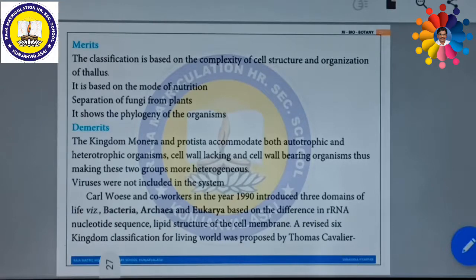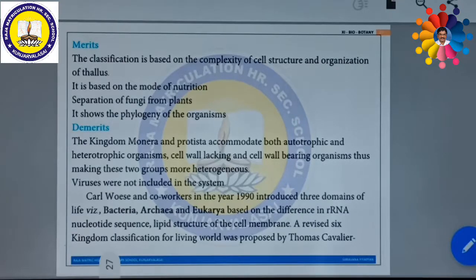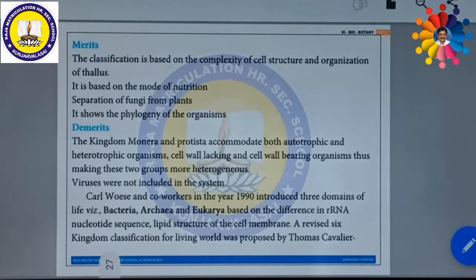The demerits: the kingdoms Monera and Protista accommodate both autotrophic and heterotrophic organisms — both cell wall-lacking and cell wall-bearing organisms. Some organisms have a cell wall and some do not, yet they are kept in the same group, making these two groups more heterogeneous. Apart from this, viruses were not included in this system, which is also an important limitation.